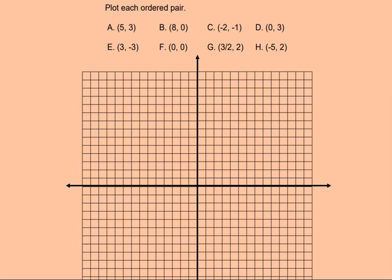Let's plot some points on the rectangular coordinate system. Point A has the coordinates of 5, 3. The first value tells us how far we go on the x-axis, and the second tells us how far we go on the y-axis. Whenever we're plotting a point, we always start at the center or the origin. So this tells us to go five spaces on the x-axis. A positive number means we're going to the right, a negative number means we're going to the left.